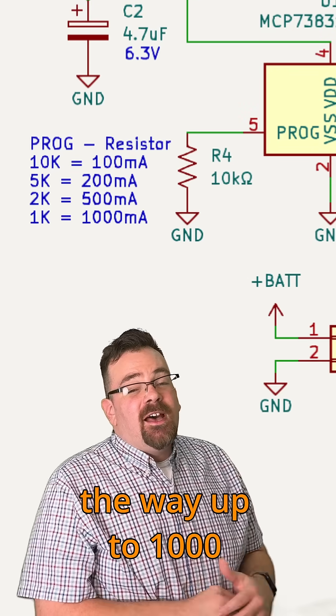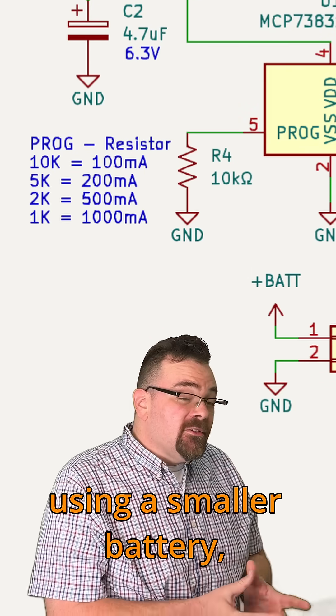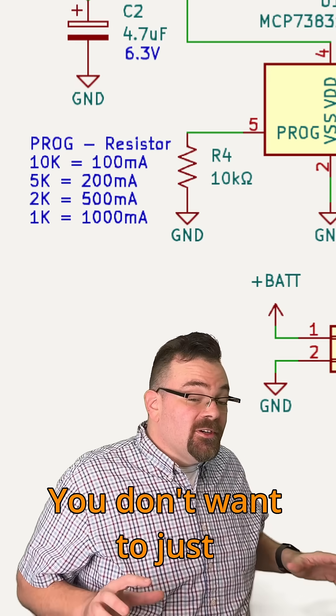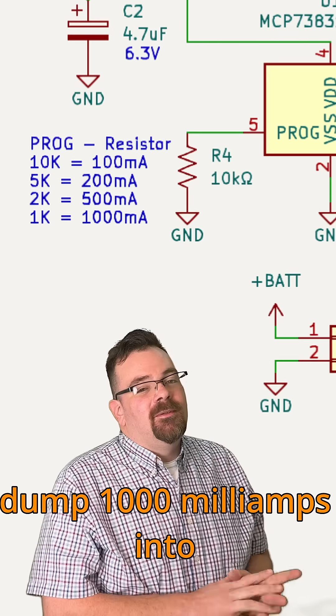We can change this all the way up to 1,000 milliamps, but if you're using a smaller battery, it's important that you charge it slow. You don't want to just dump 1,000 milliamps into it real quick.